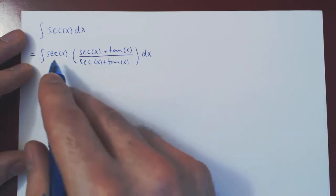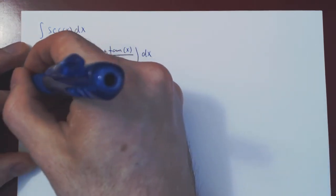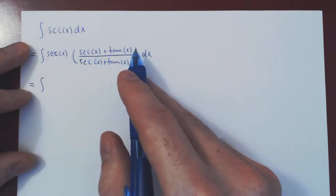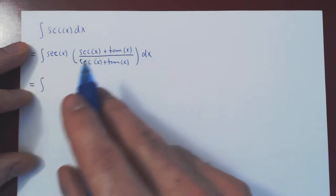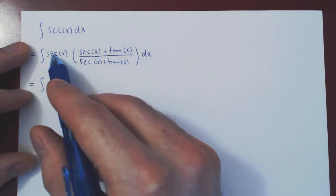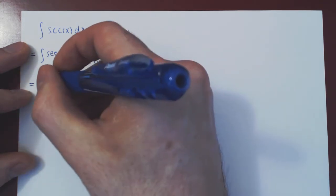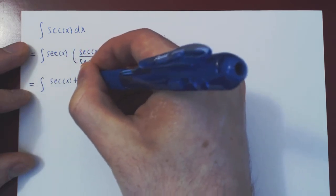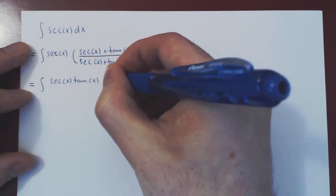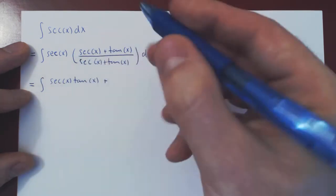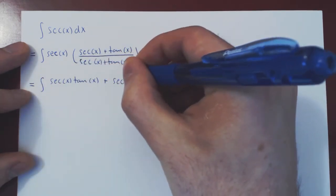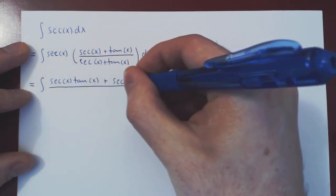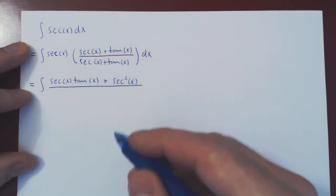And you might think, well why is this useful? Well, let's go one step further. Let's multiply our numerator. And just to make it more obvious, I'll also change the order. So I'll do secant times tangent first, plus secant times secant, secant squared. And this is all over secant of x plus tan of x.